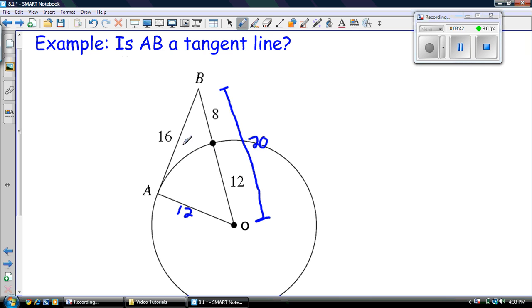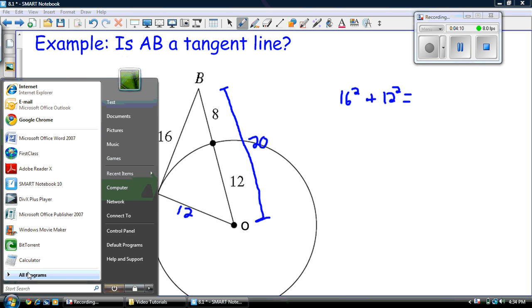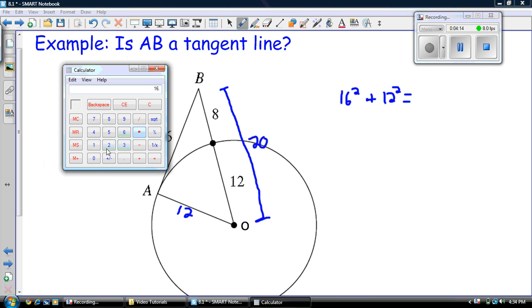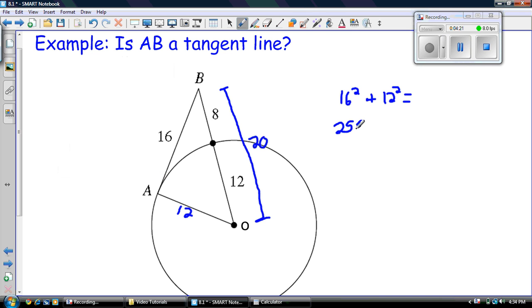So what should happen: if we go 16 squared plus 12 squared, we should get 20 squared. Let's try it. So let me break out my calculator here. 16 times 16 equals 256. 256 plus 144, and that equals 400.